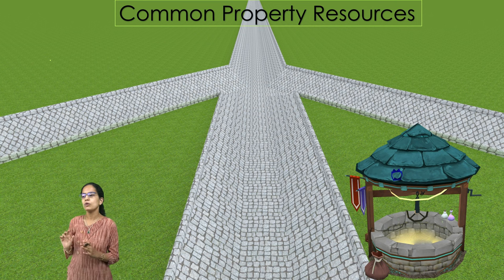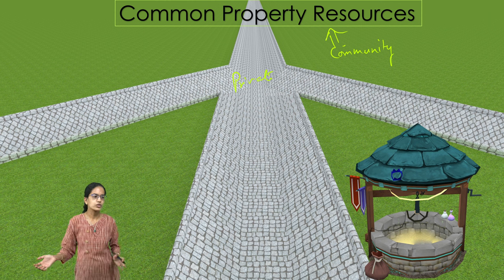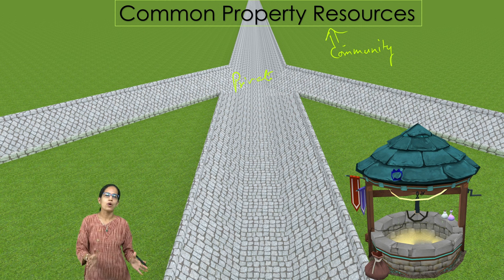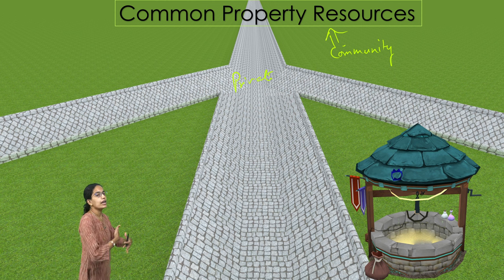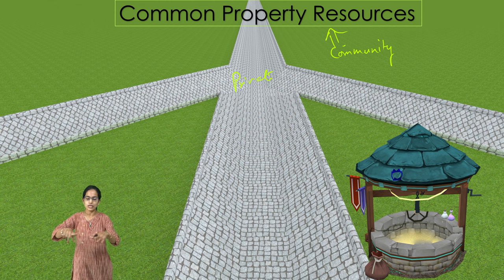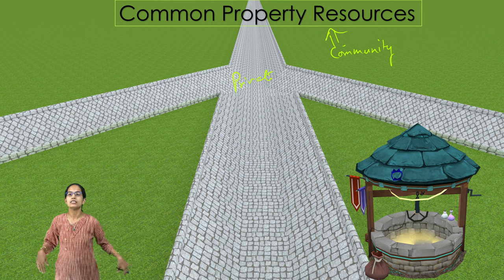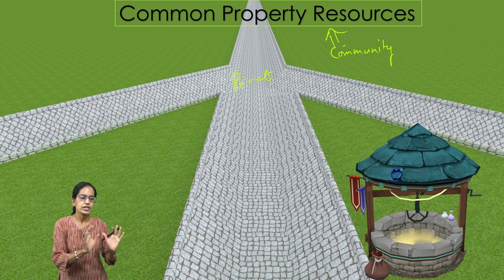When we talk about land ownership, it can be in two forms: private ownership and community ownership. Community ownership — called CPR (Common Property Resources) — is owned by a group or community. In a village, your house and its boundaries are a private resource, but everything outside — forest areas, transport areas — is maintained collectively by everyone.